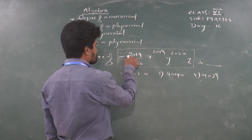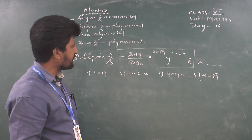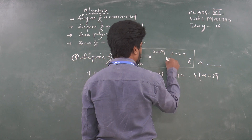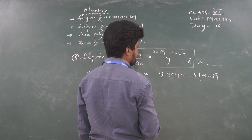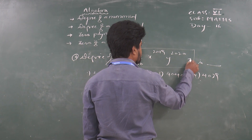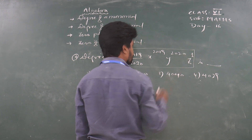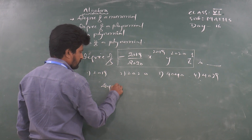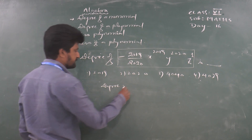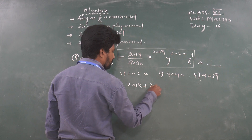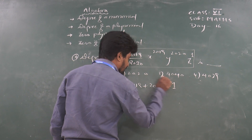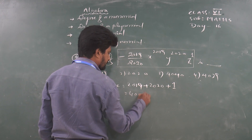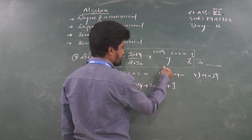Here, minus 2019/2020 is the constant, and the variables are x, y, and z. The index of x is 2019, the index of y is 2020, and z has no written power, so its index is 1. The degree is the sum of all indices: 2019 plus 2020 plus 1 equals 4040. So the answer is option 3: 4040.